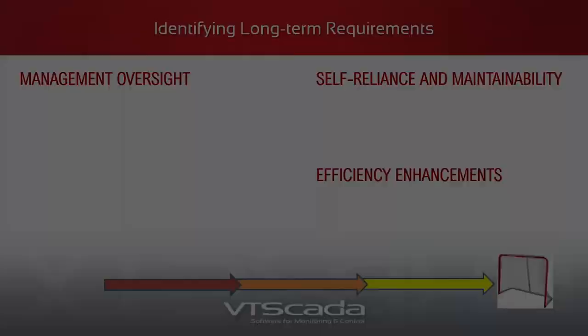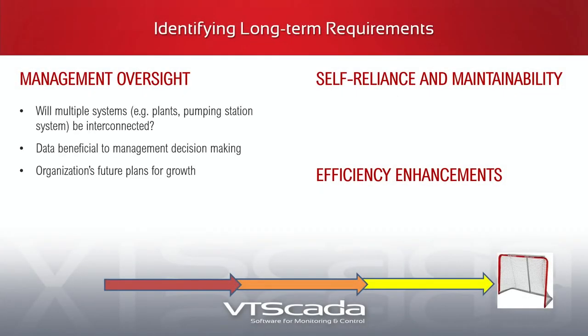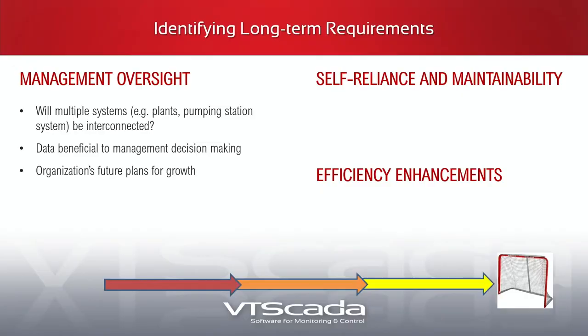Management oversight is becoming much more of interest, rather than just simply having an operational system. Where are we going in the future? Are we going to have multiple systems, tie them together, with centralized data access? How do you plan for growth? Do you buy a system only capable of a certain level of growth when you know you're going to grow well beyond that? I'm in Texas and there's not a utility here that is not currently going through growth.